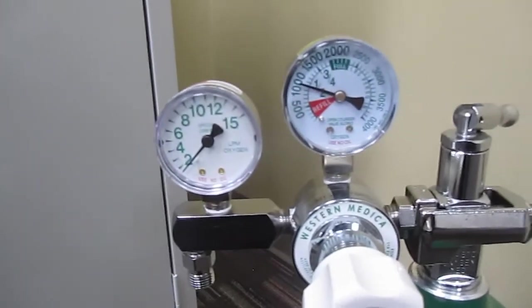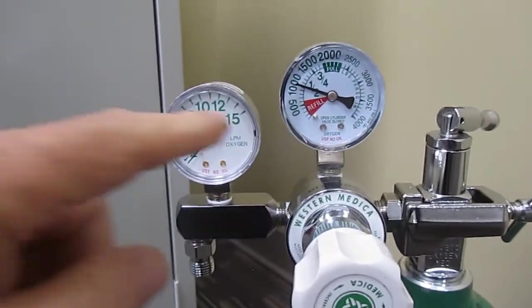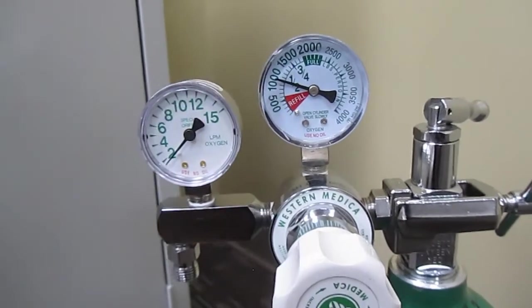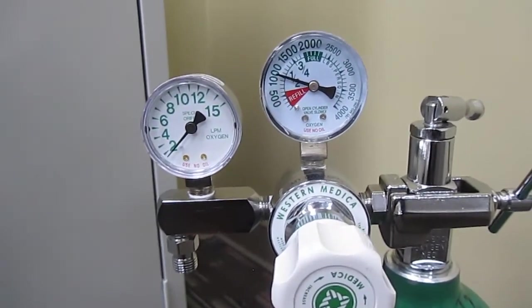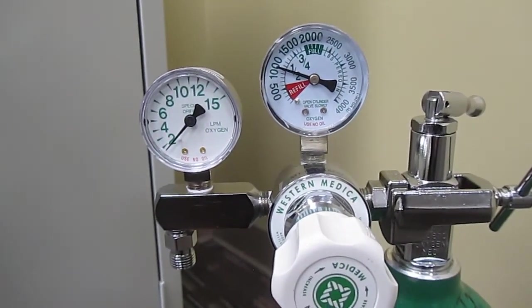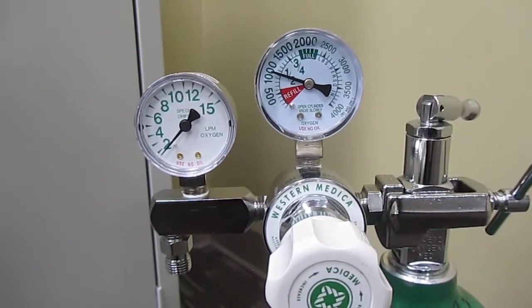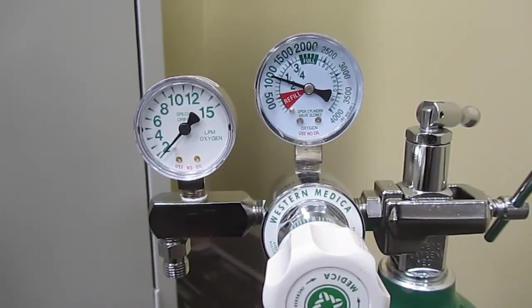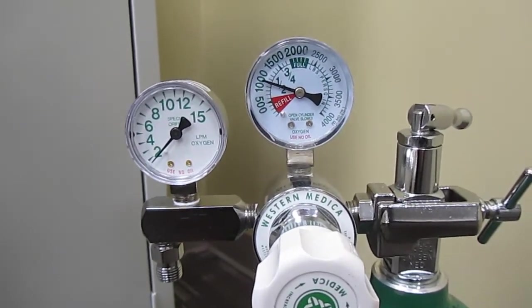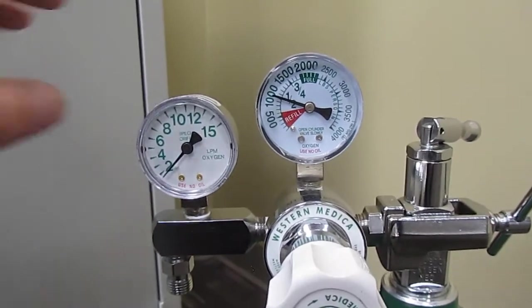Here is another gauge, and here we have the pounds per square inch. Sometimes we call that PSI, pounds per square inch. Sometimes we call it PSIG, pounds per square inch showing on the gauge.